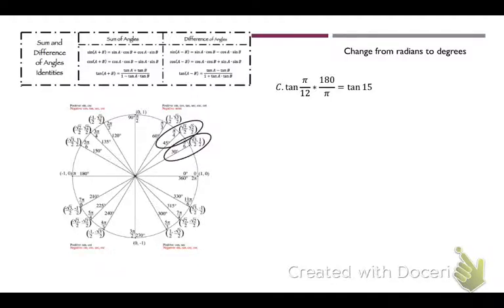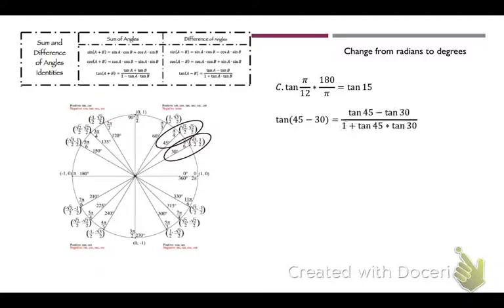Tangent of 15 is the same thing as 45 minus 30, because 15 is not on our circle, so we have to create it somehow. We're going to do tangent of 45 minus 30 using the bottom equation under difference of angles: tangent of A minus tangent of B over 1 plus tangent of A times tangent of B. So that's tangent of 45 minus tangent of 30 over 1 plus tangent of 45 times tangent of 30.